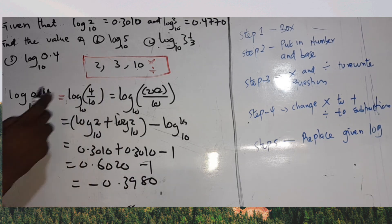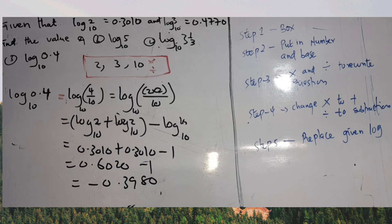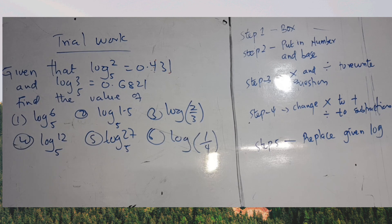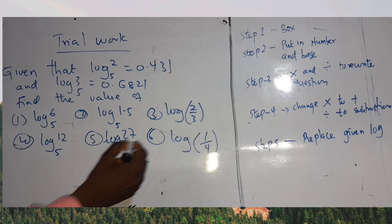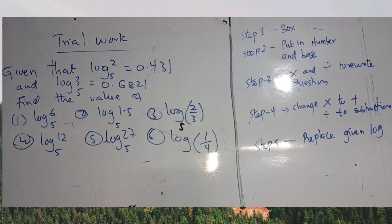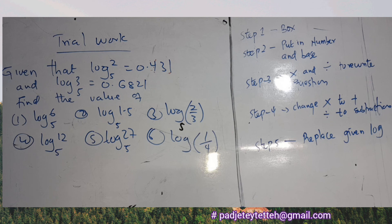Now try to solve the practice questions on the board. Given that log base 5 of 2 = 0.431 and log base 5 of 3 = 0.6821, find the value of: log base 5 of 6, log base 5 of 1.5, log base 5 of (2/3), log base 5 of 12, log base 5 of 27, and log base 5 of (1/4). Thank you for watching — don't forget to subscribe and keep sharing!